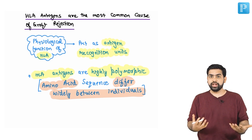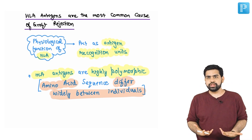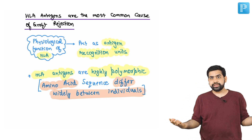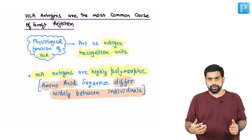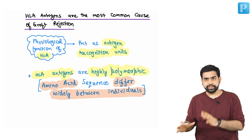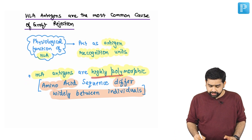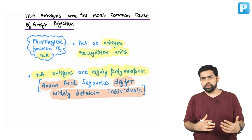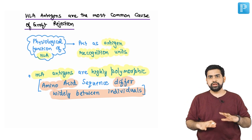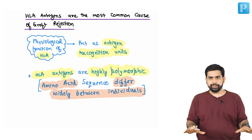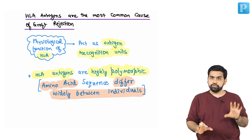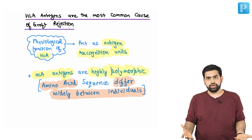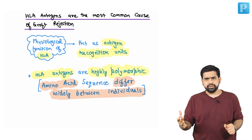HLA antigen is the most common cause of graft rejection. The physiological function of HLA in our body is that it acts like an antigen-recognizing unit. HLA antigens are highly polymorphic — their amino acid sequences differ from individual to individual. Unless it is identical twins, there is a very high probability that two people will not have a 100% HLA match.